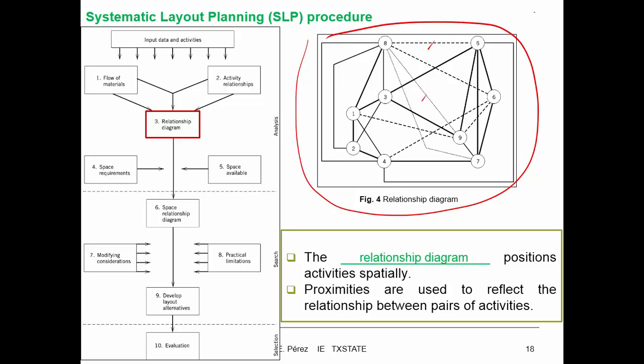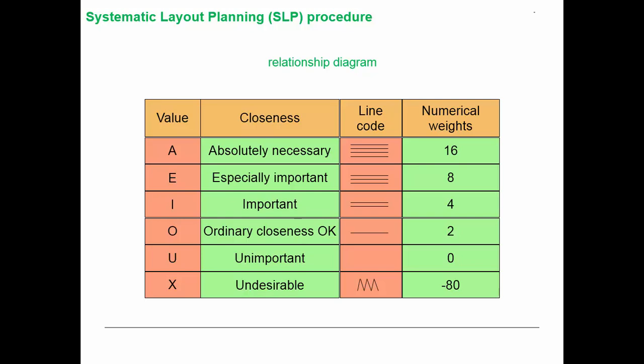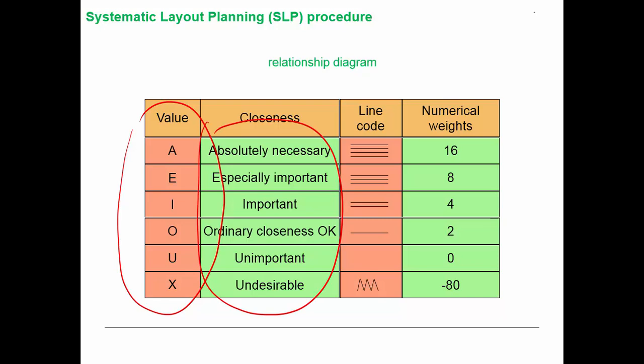We have different types of connections in the relationship diagram. Dotted lines represent the strength or importance of the connection between departments. The stronger the line, the stronger the relationship or closeness between those two departments. Proximities are used to reflect the relationship between a pair of activities. Four lines represent that the relationship is absolutely necessary; no line means it's unimportant; and a specific line type means we want to keep those departments apart.